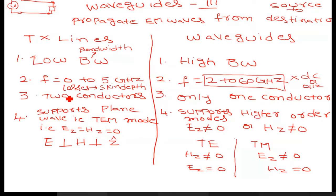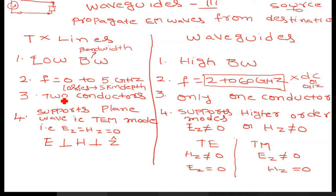If you want to transmit a low frequency signal, you have to use only transmission lines. Another major difference is that transmission lines require two conductors. Whatever transmission line you take, at least two conductors are required in order to support the propagation of EM waves from one place to another.